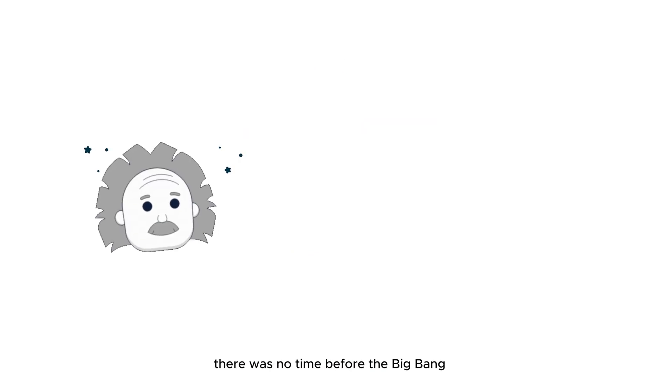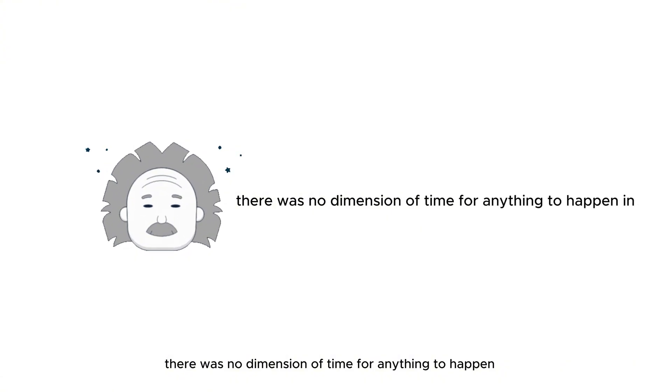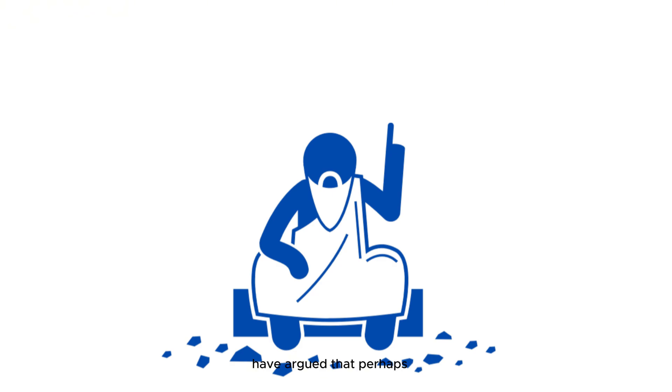So when physicists say there was no time before the Big Bang, they mean there was no dimension of time for anything to happen in. Some philosophers, however, have argued that perhaps there was a timeless state before the universe as we know it came into being.